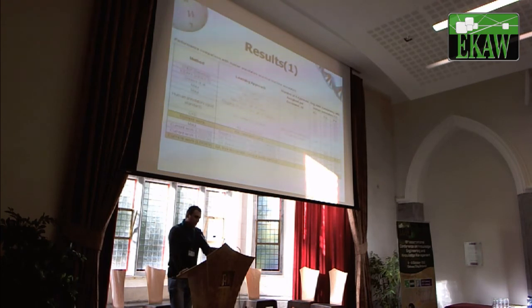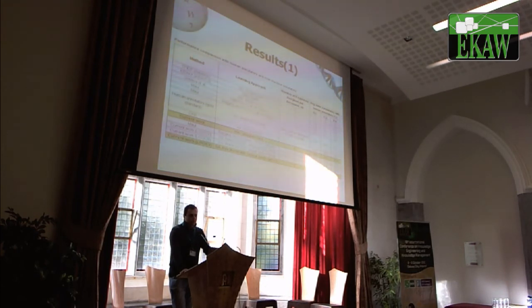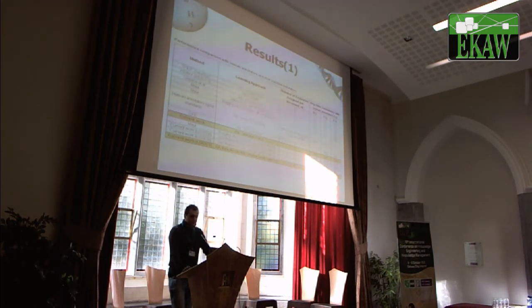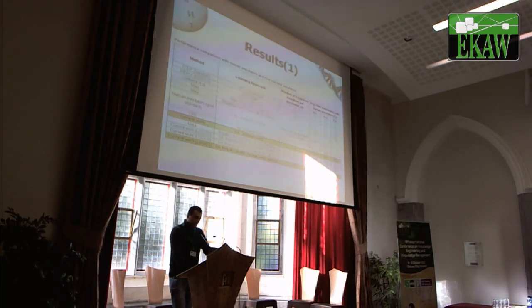The average inter-consistency between the 15 human teams is 30.5. Our unsupervised machine annotator, which uses just the summation of feature values, achieves 30.7%, matching the average human accuracy. When we use the genetic algorithm-based supervised system, we achieve 33.5% inter-consistency.